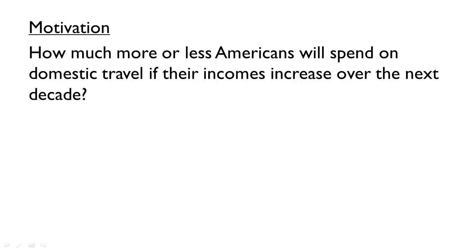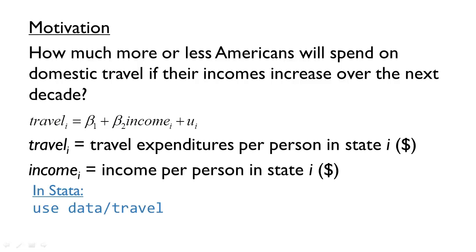Let's start with an example to motivate the logic of a hypothesis test. Suppose we'd like to know how much more or less Americans will spend on domestic travel if their incomes increase over the next decade. What econometric model could we estimate to help answer this question? Our dependent variable should be domestic travel expenditure, and our independent variable should be income. The travel dataset has information on these two variables for each U.S. state.